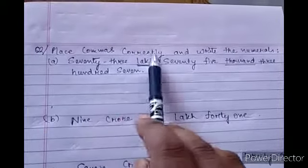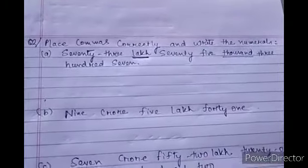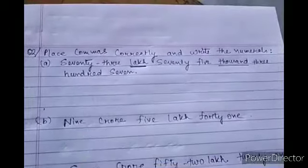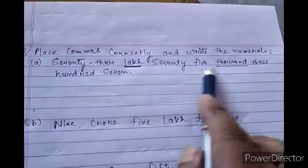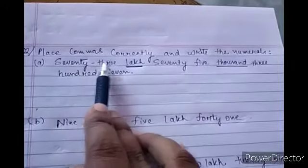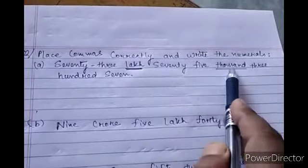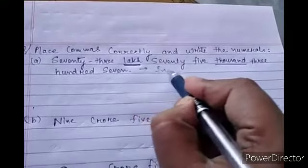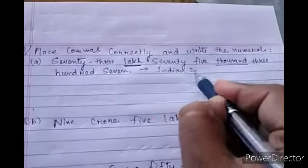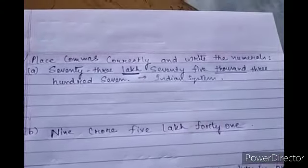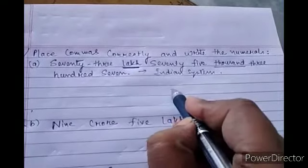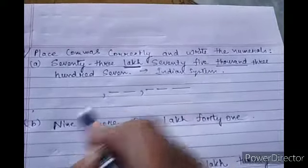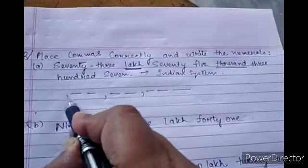Now exercise 1.1, question number two. The question is: place commas correctly and write the numerals. You have to write in numbers. First identify the system — seventy-three lakh, seventy-five thousand: lakh and thousand indicate this is the Indian system.